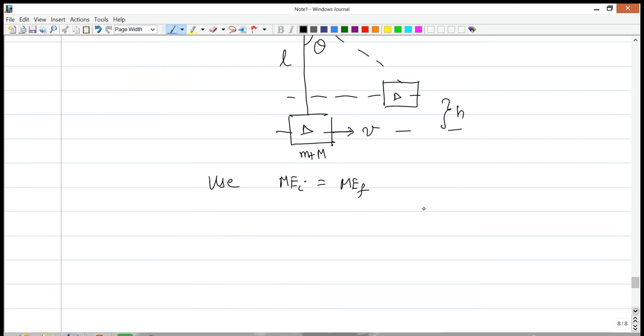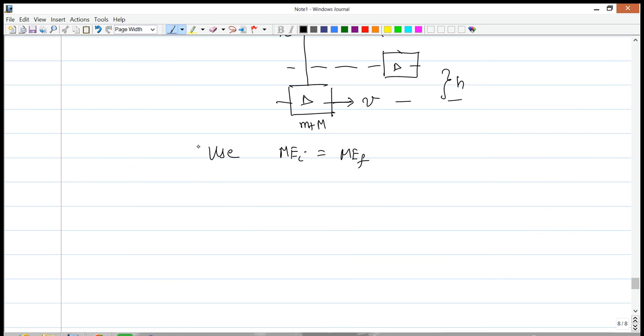Now in the beginning, the blocks have kinetic energy only. So my ME_i is composed of the kinetic energy of the blocks only. No potential. Now, once it has swung to its maximum height, then it has no kinetic and all potential. So m plus M times g times h. So the M and the masses cancel out. And so we get h is equal to v_f square divided by 2g.